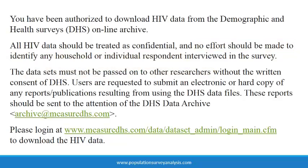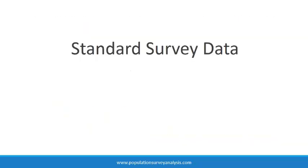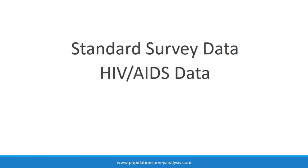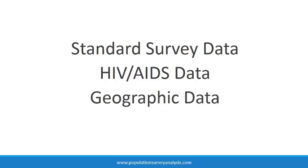To request access to DHS data, you must describe how you plan to use the data. Separate permissions are needed to access standard DHS survey data, HIV-AIDS data, and geographic data. The latter two are considered extra sensitive information because GPS coordinates, even though they are offset, could possibly be used to uniquely identify a household, and people with HIV-AIDS experience extreme stigma in many communities.